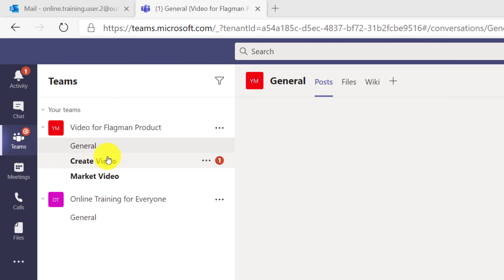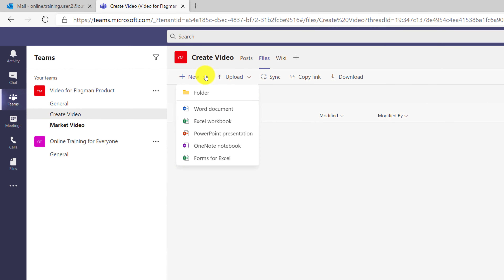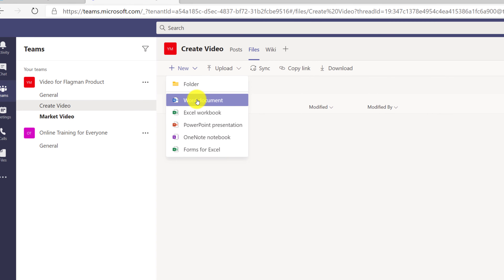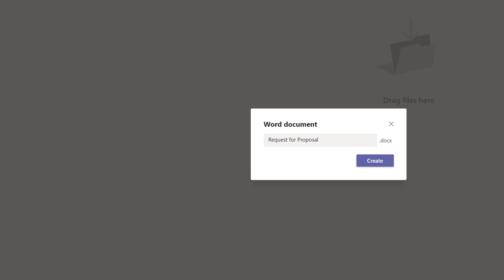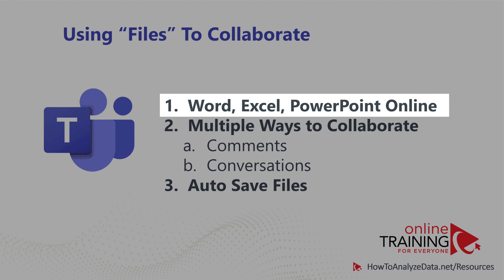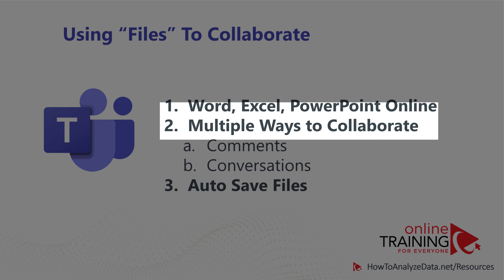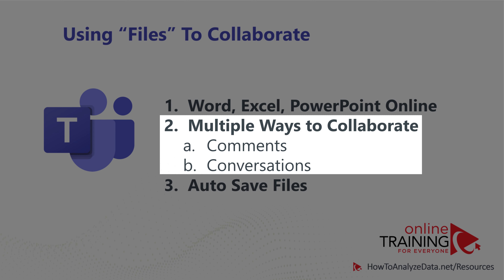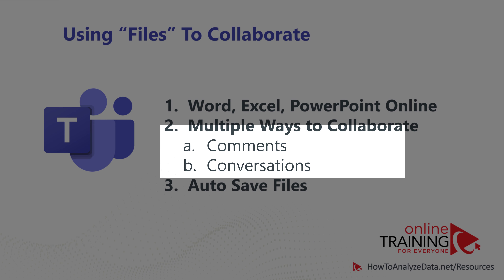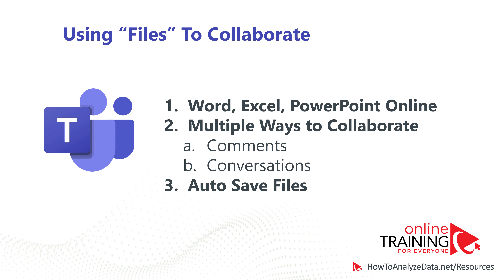Patricia navigated to the Create Video channel, clicked on Files, and clicked on Start New Document. Because the request for proposal is a Word document, she chose Word document and named it request for proposal.docx. Microsoft Teams provides phenomenal collaboration capabilities — it has built-in versions of Microsoft Word, Excel, and PowerPoint Online right inside Teams. It offers various ways to collaborate: you can use comments, conversations, and version control. On top of that, it auto-saves information so you don't have to worry about losing anything.